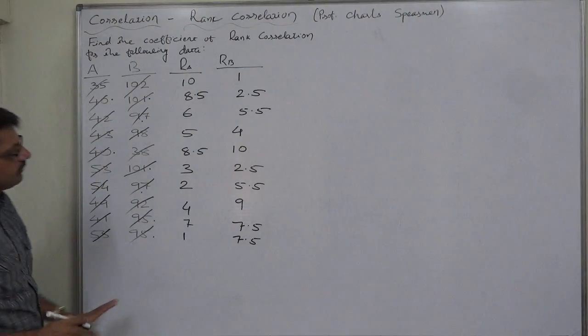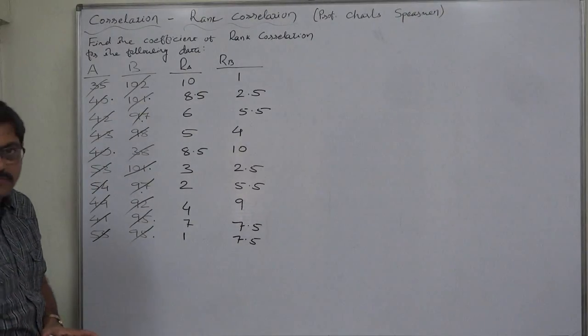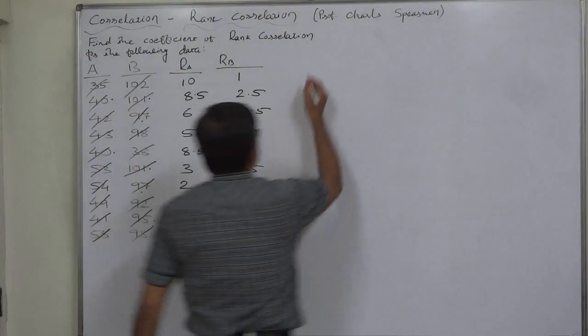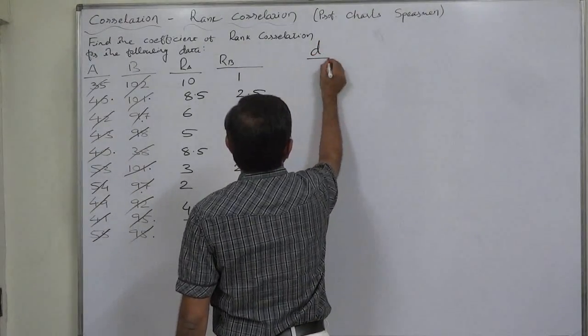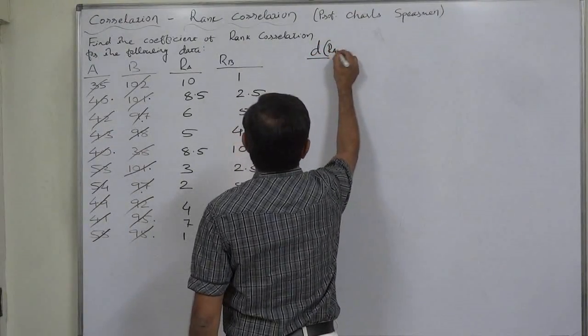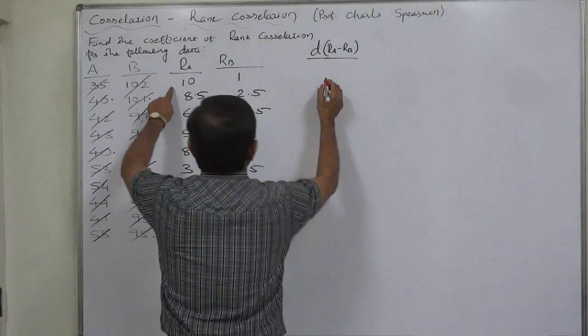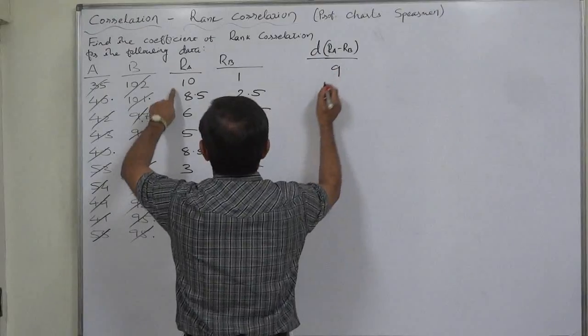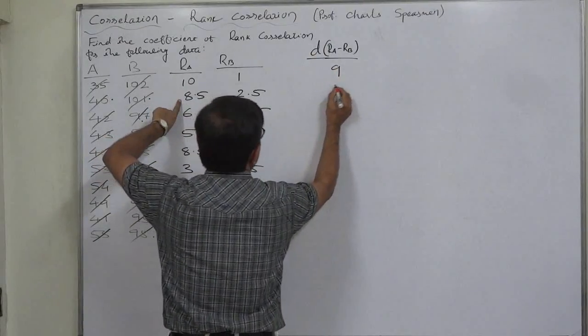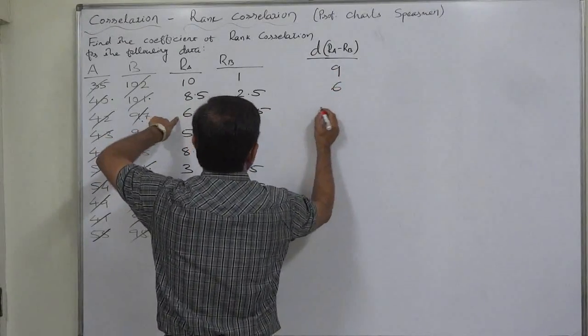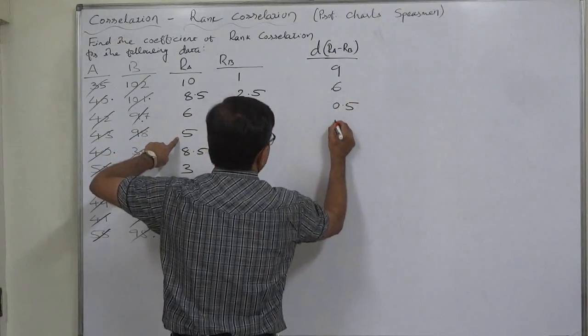So, in this way, we have to use mean of the forthcoming ranks. Now, it is deviation D that will be RA minus RB or RB minus RA. 10 minus 9, 10 minus 1 equals 9. 8.5 minus 2.5 is 6. 6 minus 5.5, 0.5. 5 minus 4, 1.